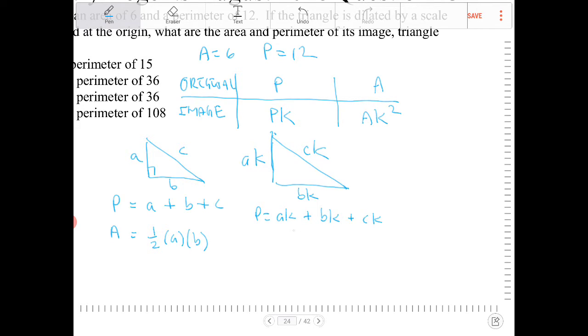The perimeter here can be seen to be ak plus bk plus ck. With a little bit of algebraic manipulation, I'm going to factor out the k because there's a common factor throughout all three terms. So I have (a plus b plus c) times k. I'll call this P₂ and this P₁, and this is A₁.